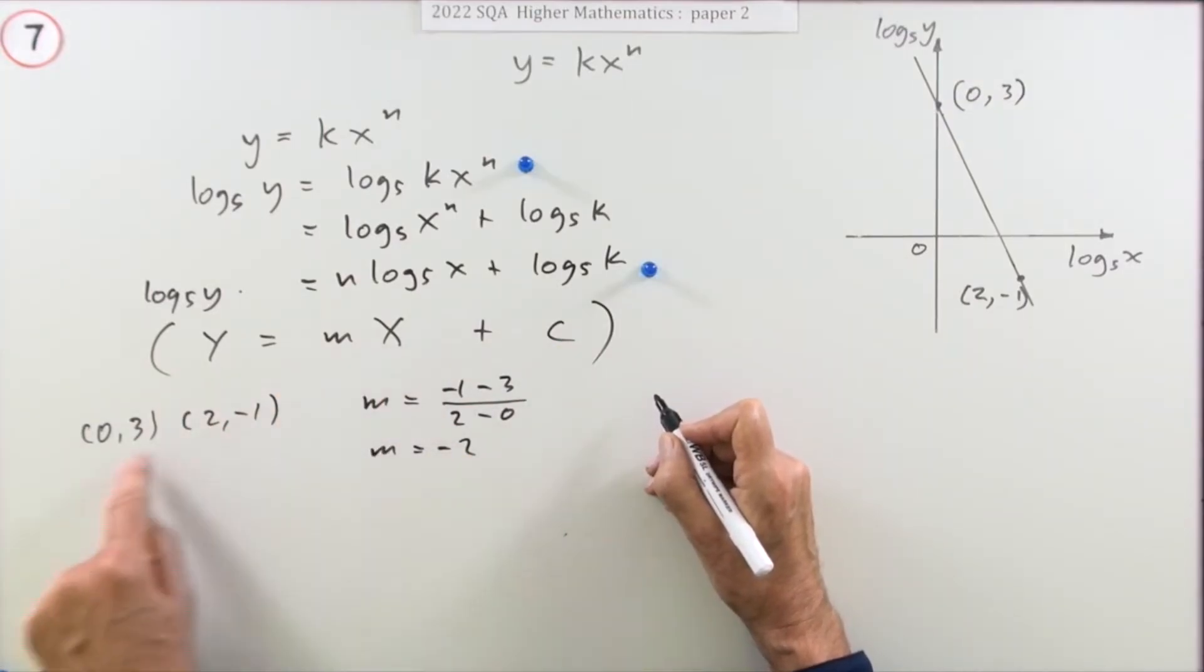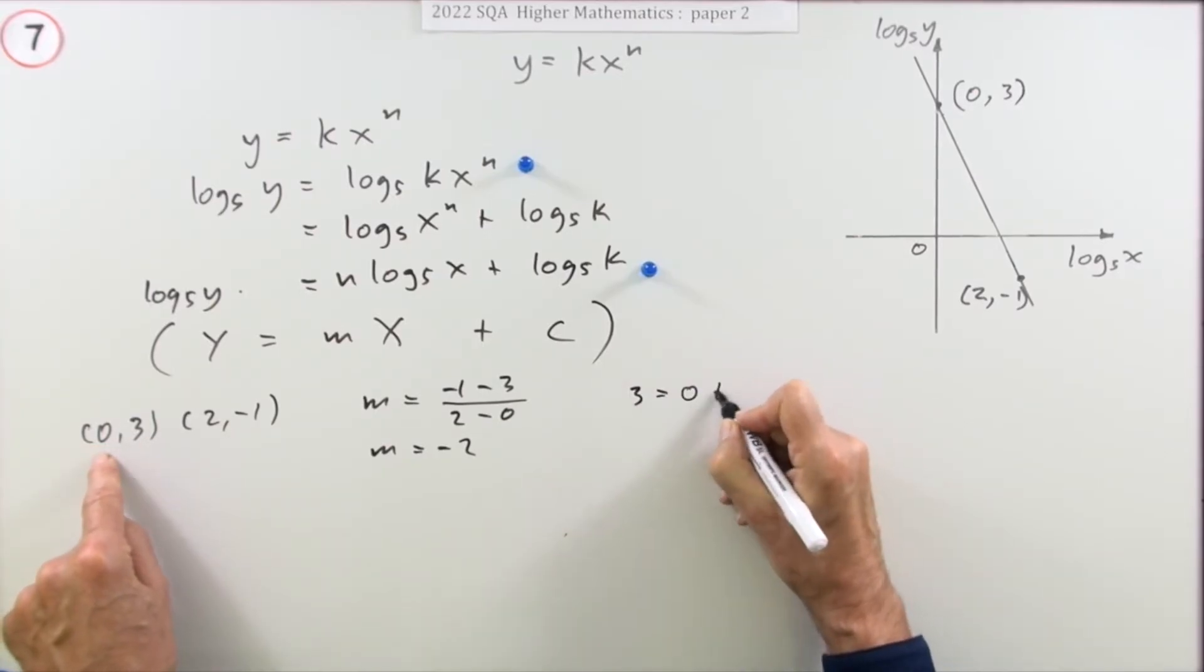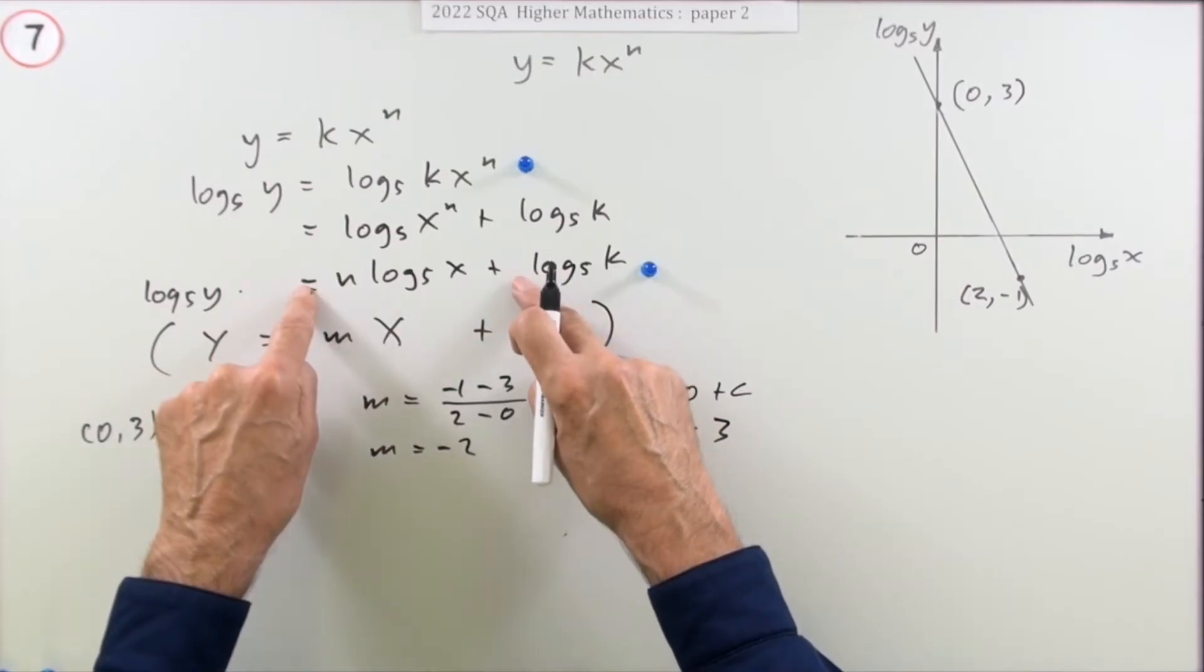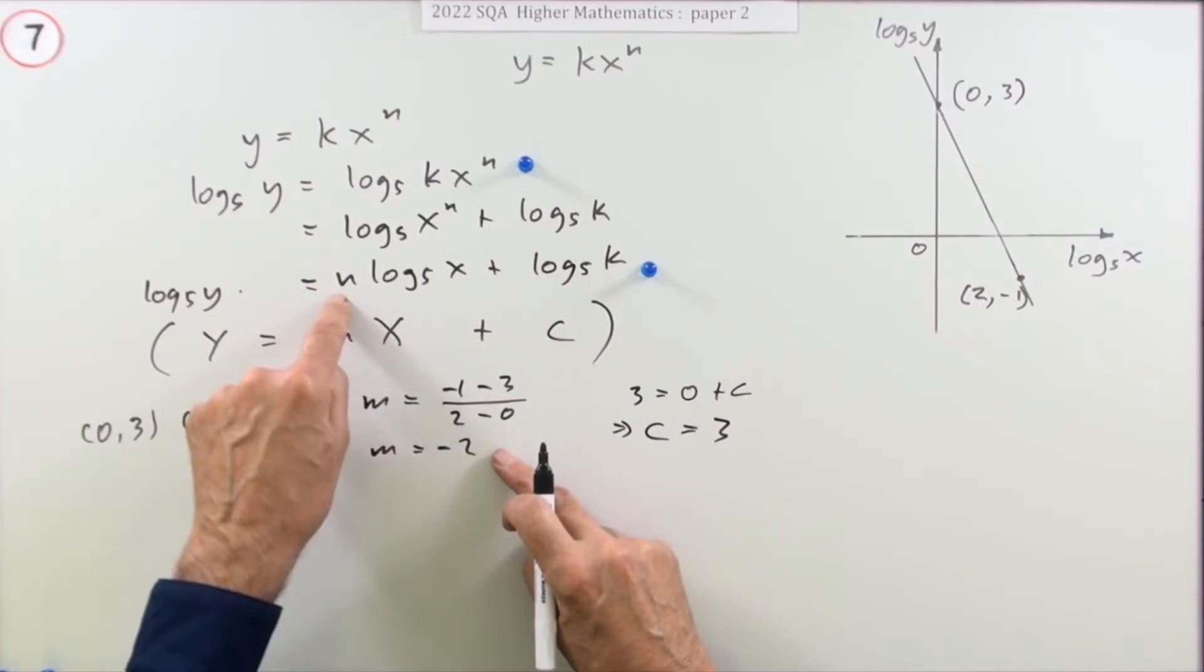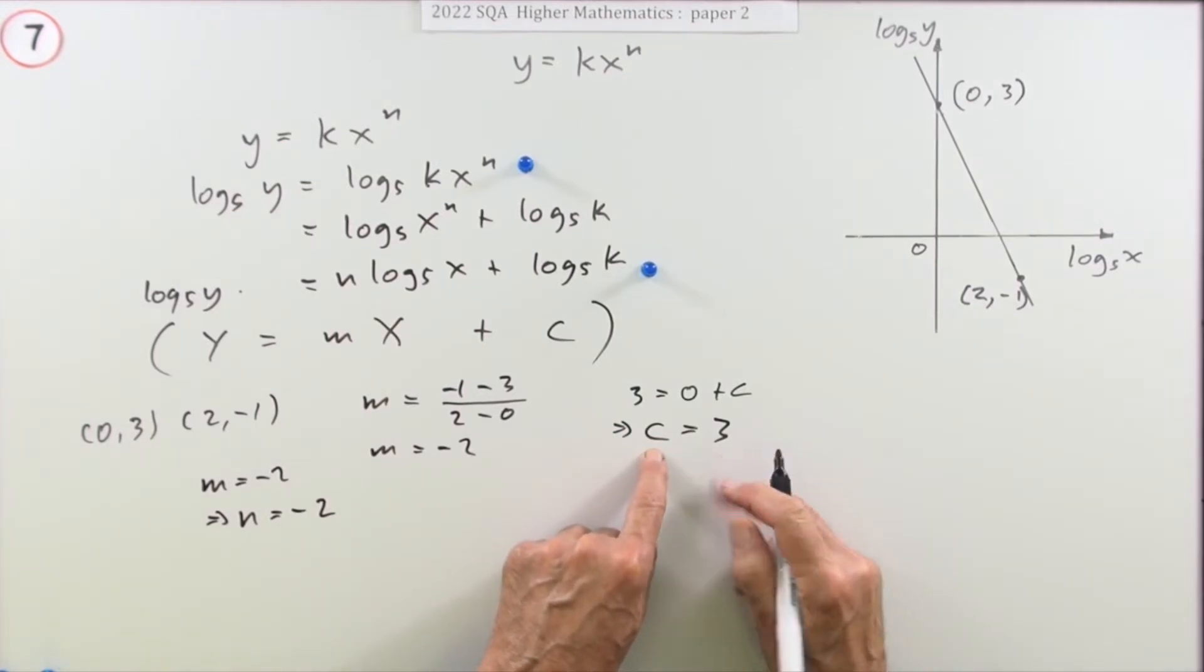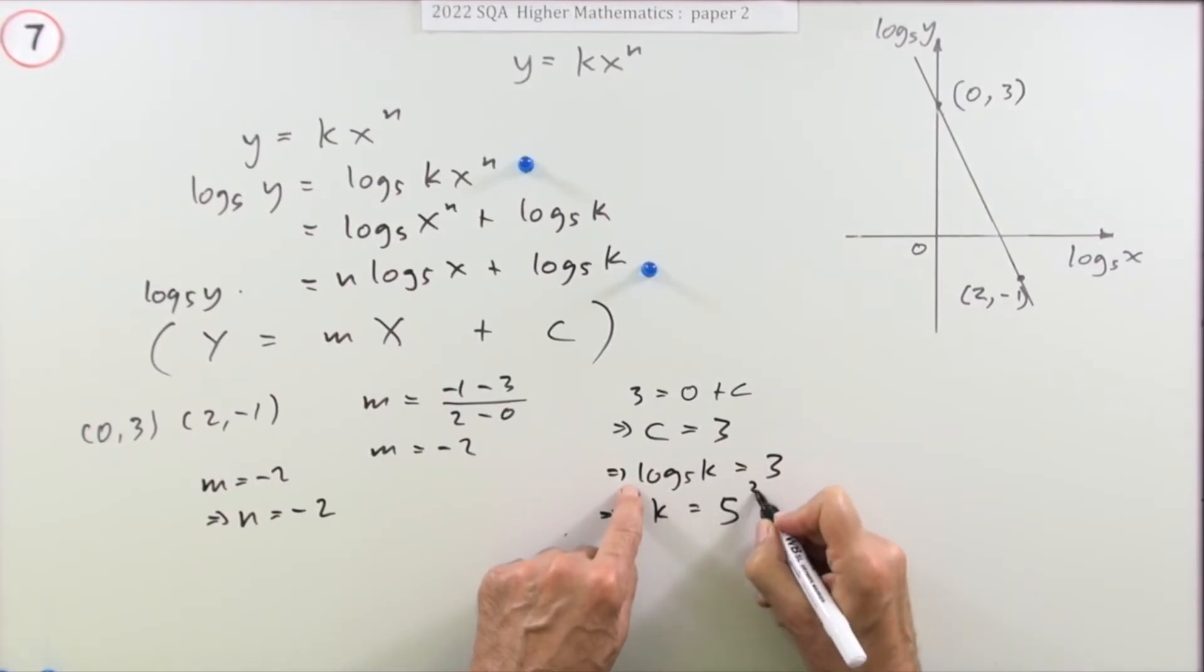Or you could put one of those numbers into it. Well, put that one in, because that's the obvious one. So putting that one into it, you've got 3 equals 0 plus c, so that c equals 3. But you could have gone straight in with c equals 3. And now you can compare those parts with those parts. Well, the m was the n. So m equals -2 means that n equals -2. Now the c equals 3 means that log base 5 of k equals 3, because the c corresponds to this term. So that k must be inverse, which is 5 to the power 3, so that k is 125.